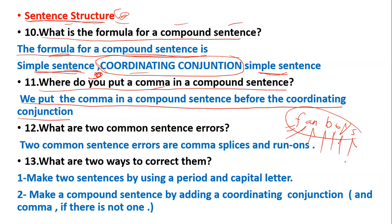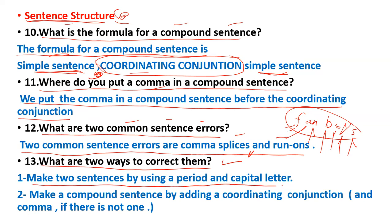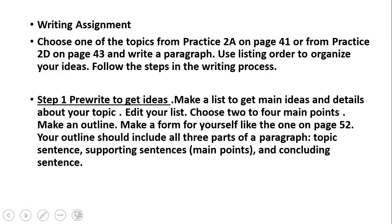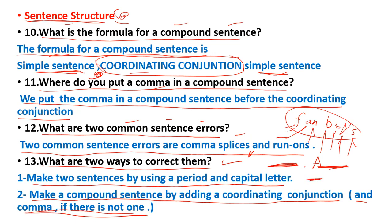What are two comma sentence errors? Two common sentence errors are comma splice and run-ons. What are two ways to correct them? Make two sentences by using a period and capital letters. Make a compound sentence by adding a coordinating conjunction and comma if there is not one.